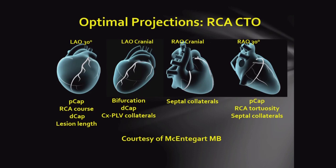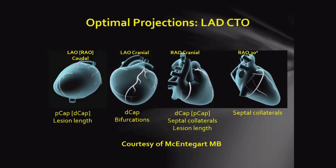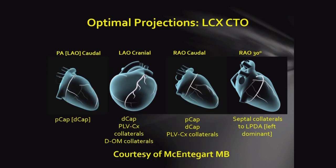For optimal projection of RCA CTO, LAO 30 is a good view to understand the proximal and distal cap, and LAO cranial is good for bifurcation and distal cap. For LAD CTO, LAO caudal or AP caudal is for proximal cap and lesion length, and LAO cranial for distal cap. For LCX CTO, AP caudal is for the proximal cap and LAO cranial for the distal cap or PLV collaterals.